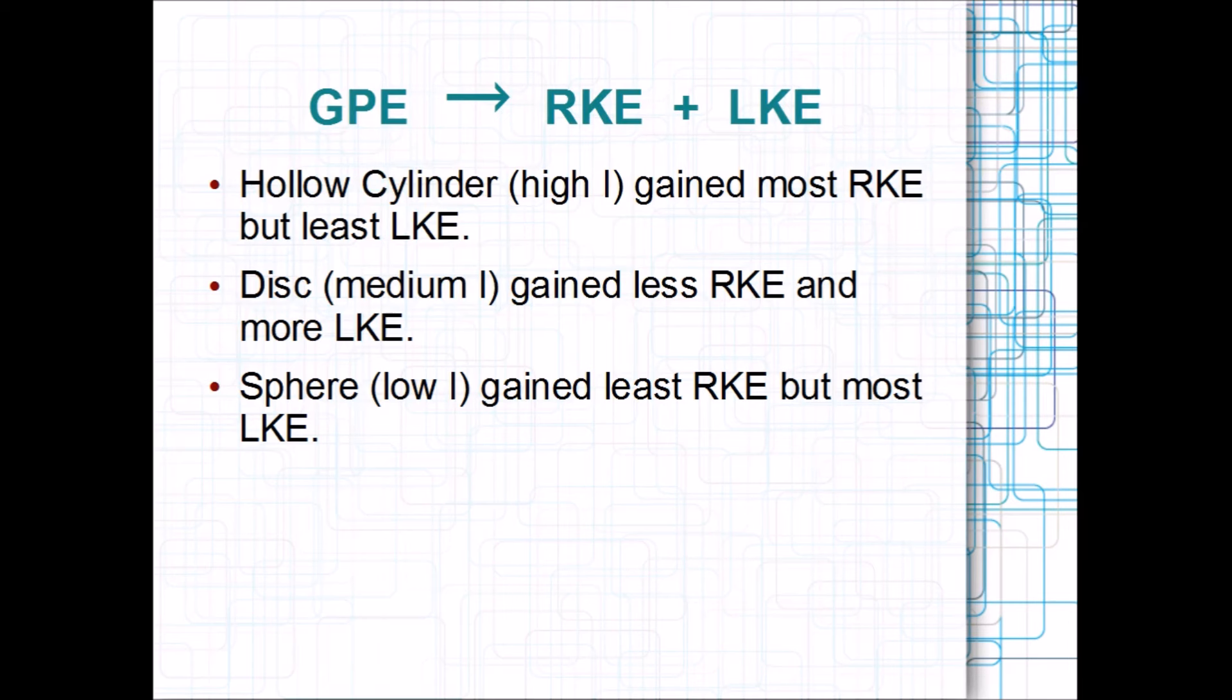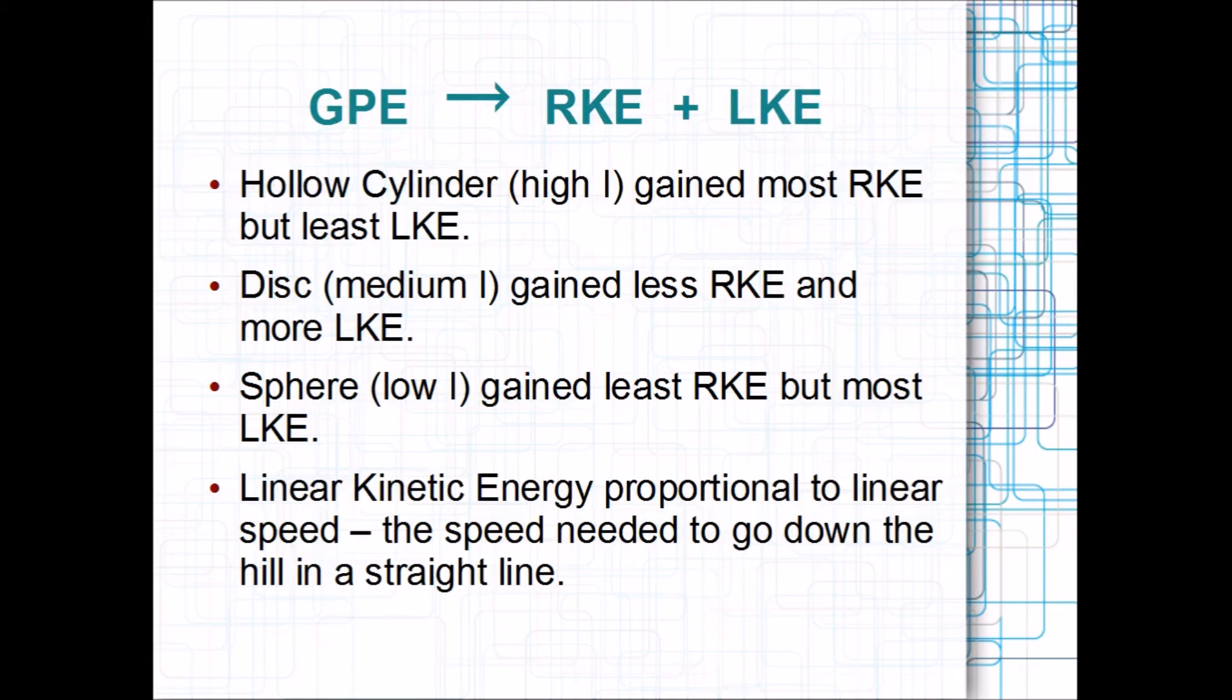But the sphere, with the lowest rotational inertia, gained the least rotational kinetic energy, but the most linear kinetic energy, because the two add together to give its potential energy at the start. Now, linear kinetic energy is proportional to linear speed, as I said, which means that the sphere actually went in a straight line the fastest.